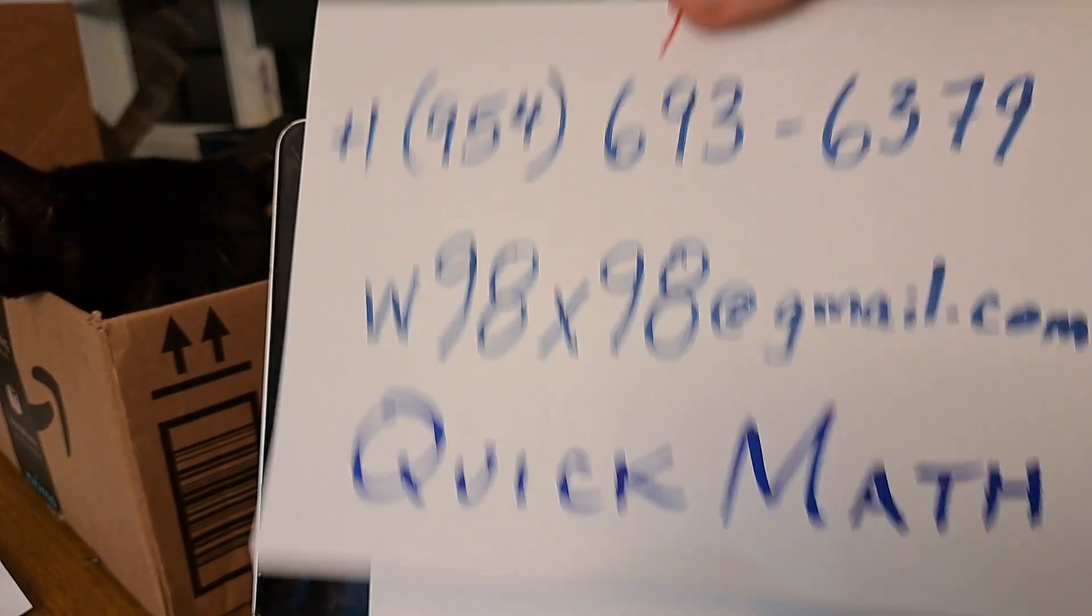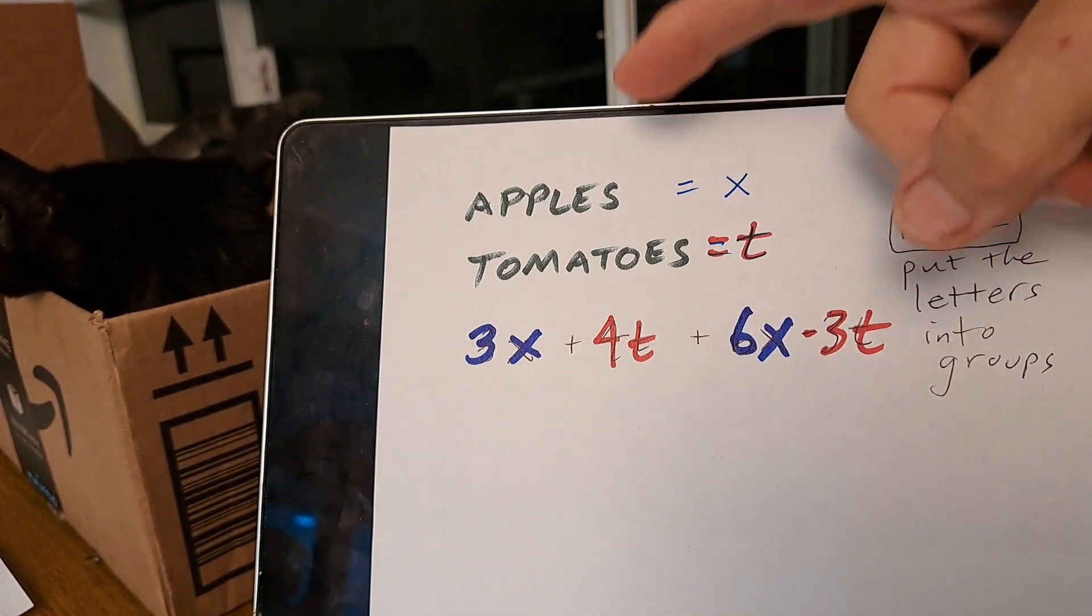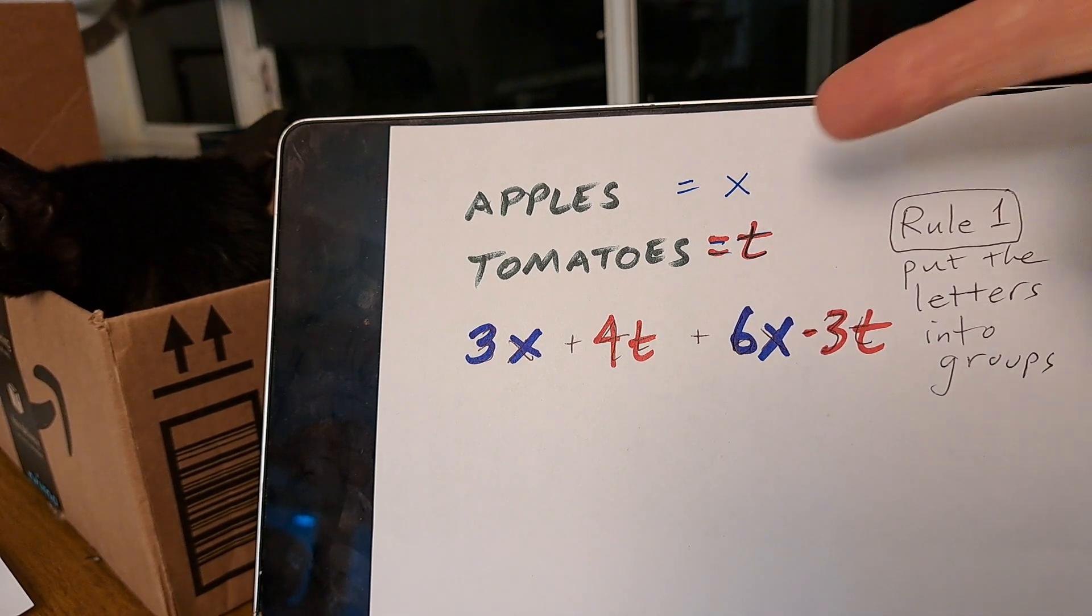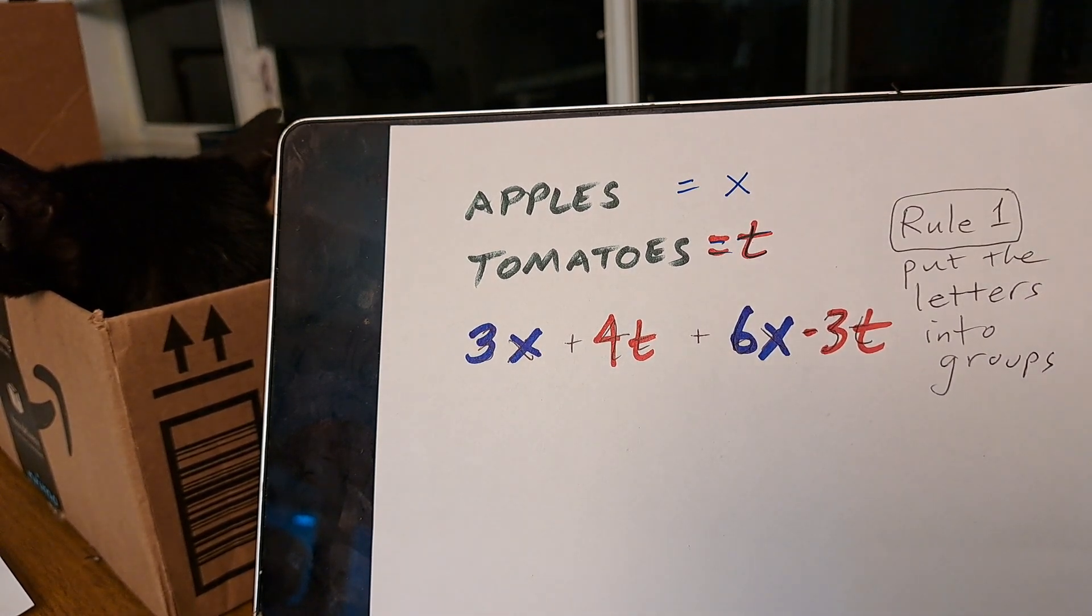Hi, this is Quick Math and today we're talking about apples and tomatoes. We'll call our apples X and the tomatoes are T.